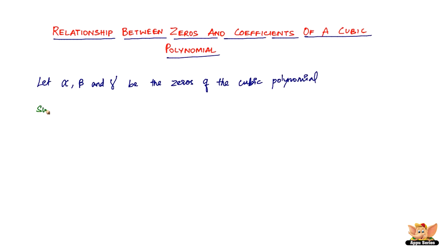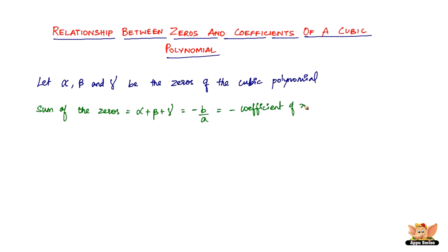The first one would be the sum of the zeros. So the sum of the zeros is nothing but alpha plus beta plus gamma, which equals minus b by a. That is the negative of the coefficient of x squared divided by the coefficient of x cubed. The cubic polynomial is something like ax cubed plus bx squared plus cx plus d equals zero.